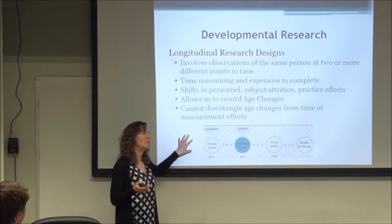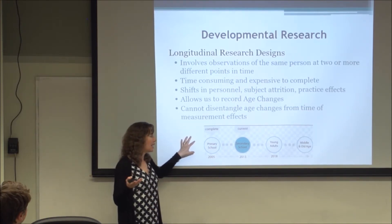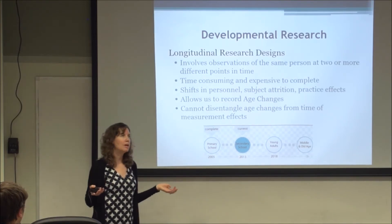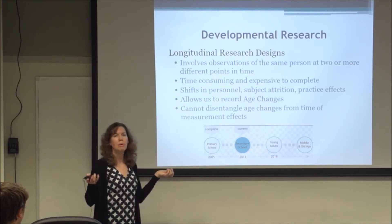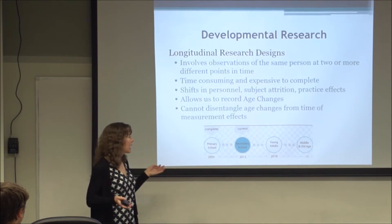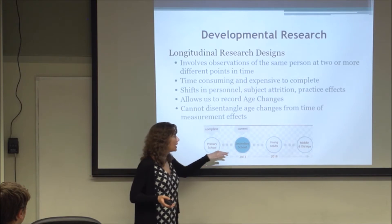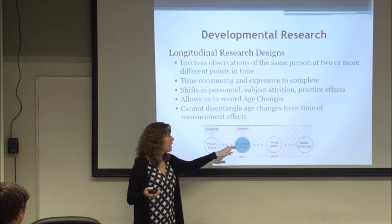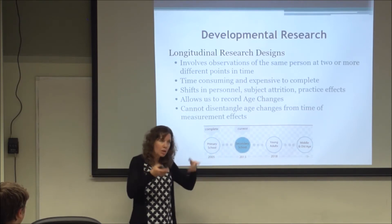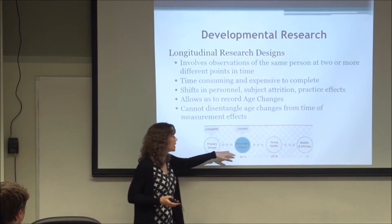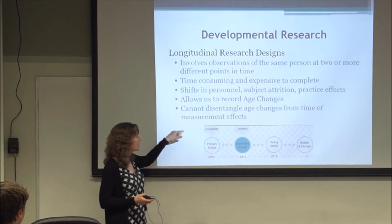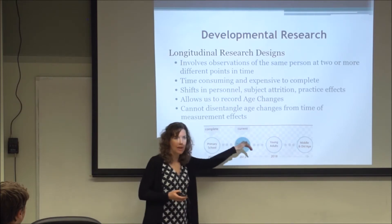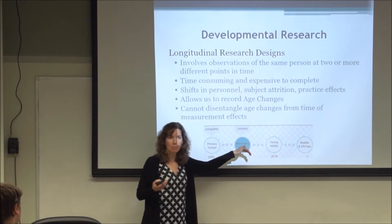For example, if you're studying people's views on terrorism longitudinally, and in the middle of the study a huge terrorist attack happens, that changes many people's views. It could then be not so much an age effect, but rather what happened during that time period that changed people's views. That's a time-of-measurement confound.